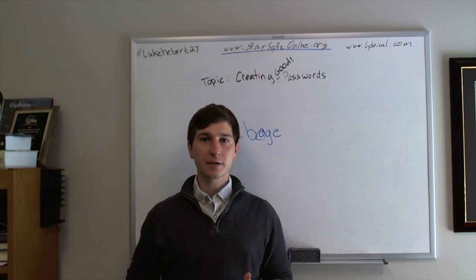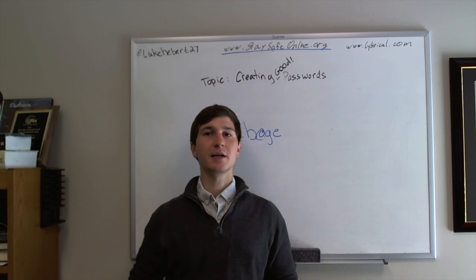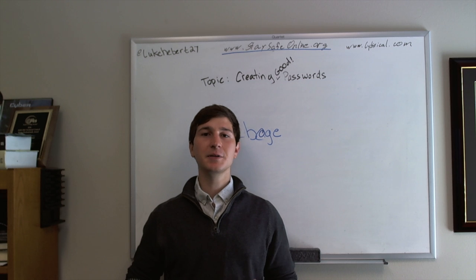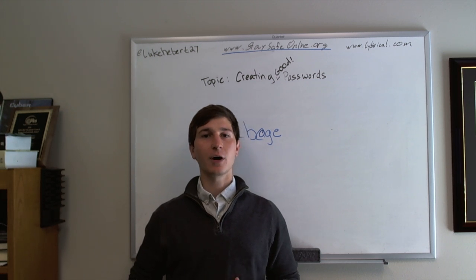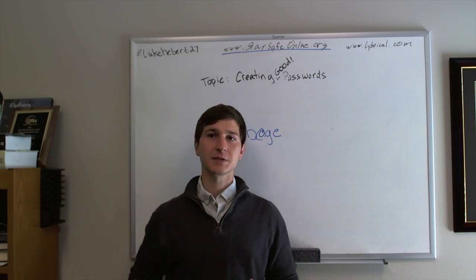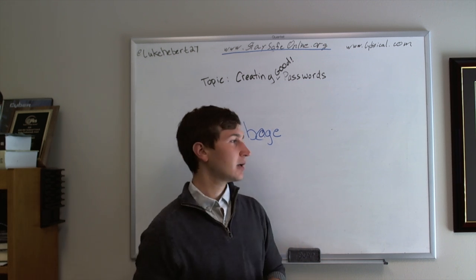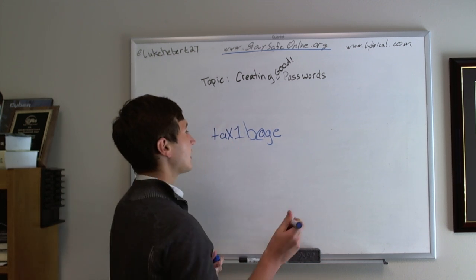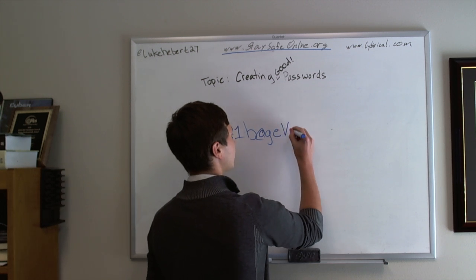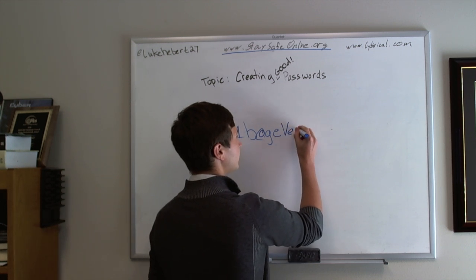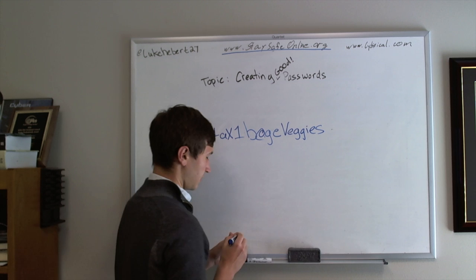Finally, I need to increase the length of the password so that it would take an infeasible time for any hacker's computer to work through all the permutations of my character set. Going off of the original "cabbage," let's add a capital V — "Veggies" — at the end.